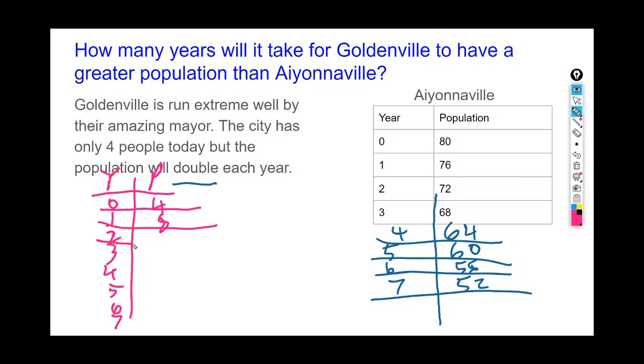If we double 4, it's 8. After one year there's 8 people. Again, it's doubling—it's not increasing linearly, so the next number is not 12. We're not adding 4 each time; we're doubling the previous number. So 8 doubled or times 2 is 16. 16 times 2 is 32. 32 times 2 is 64. 64 times 2 is 128. 128 times 2 is 256. And 256 times 2 is 512.